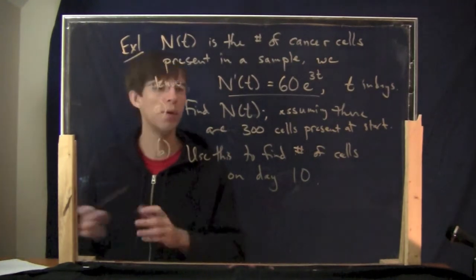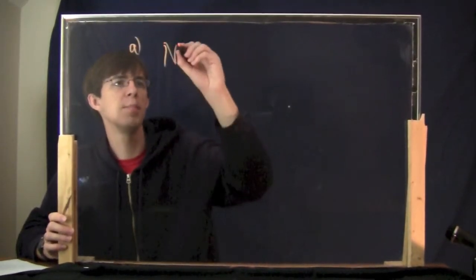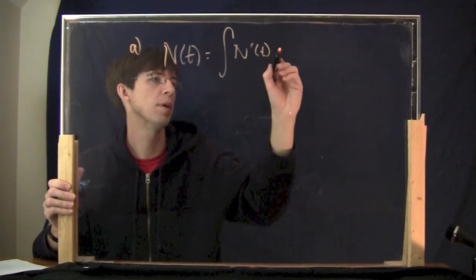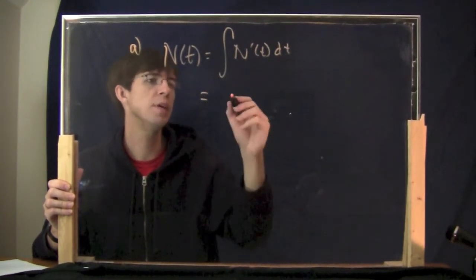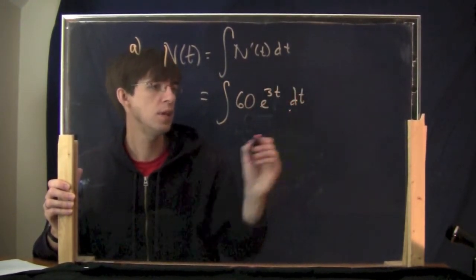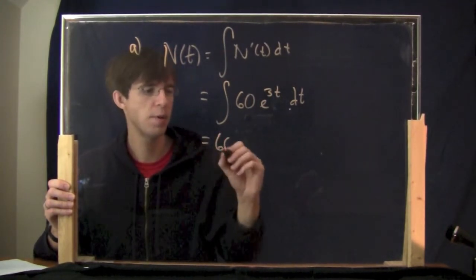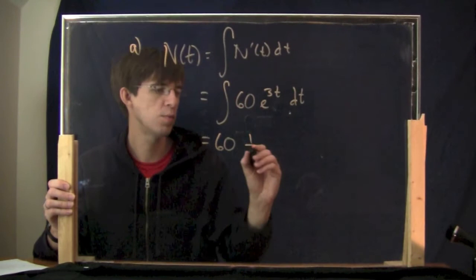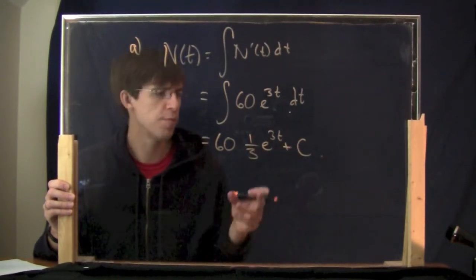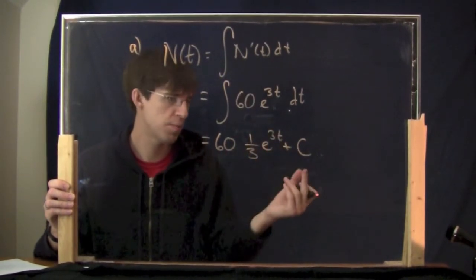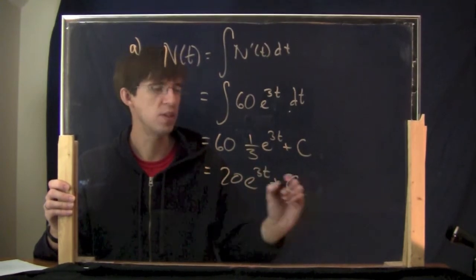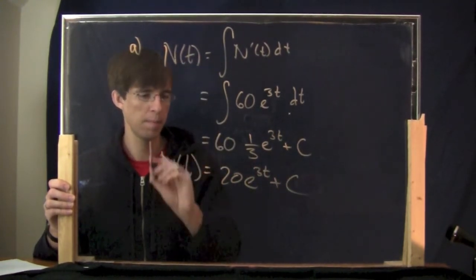For Part A, our job is to find n of t. How do you get that? You integrate the derivative: integral of n prime of t dt. You fill in that formula: integral of 60 e to the 3t dt. The 60 can just come out. The integral of e to the 3t is 1 over 3 e to the 3t plus c. Simplifying, 60 times one-third is 20, so this is 20 e to the 3t plus c. That's n of t. But we don't want the extra plus c in there.